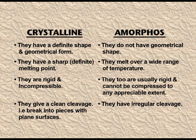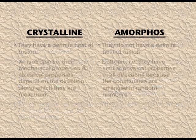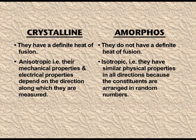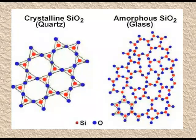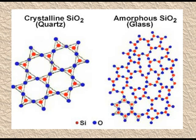Crystalline solids give a clean cleavage — when we cut them, the new surfaces generated are plain. Amorphous solids, when cut, give an irregular surface. Crystalline solids are anisotropic and amorphous solids are isotropic. For example, quartz and glass are both made up of silicon dioxide. Quartz is a crystalline solid because SiO₂ is arranged in an ordered arrangement throughout. But when SiO₂ units are randomly arranged with no orderliness, it becomes glass — an amorphous solid.